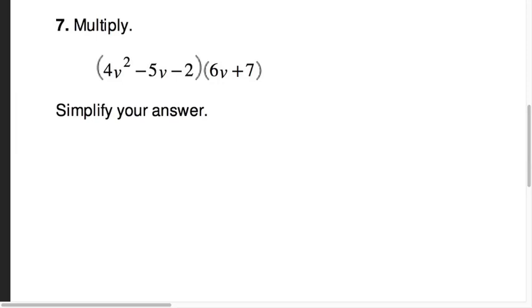And so the method we're going to talk about next for multiplying is going to be a method that's going to make it easier for us to reverse the process and factor later on. This is a method that's called the lattice method.